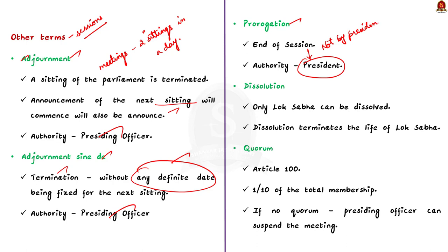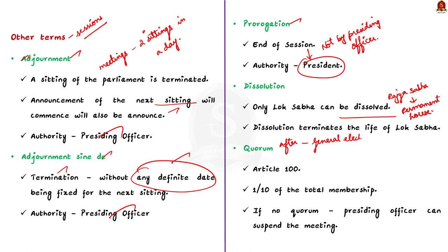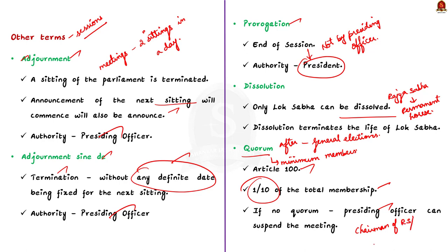Only Lok Sabha is subjected to dissolution. Since Rajya Sabha is a permanent house, it is not subjected to dissolution. While prorogation terminates a session of Lok Sabha, dissolution terminates the life of the existing Lok Sabha. After dissolution, general elections are held and a new Lok Sabha is constituted. Quorum refers to the minimum number of members required to be present in the house so that it can transact any business. Article 100 deals with quorum: it shall be one-tenth of the total membership of the house. If there is no quorum, it shall be the duty of the Chairman or Speaker to adjourn the house or suspend the meeting until there is a quorum.